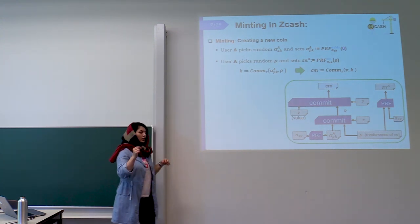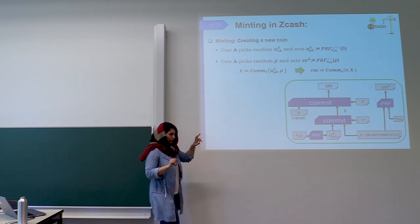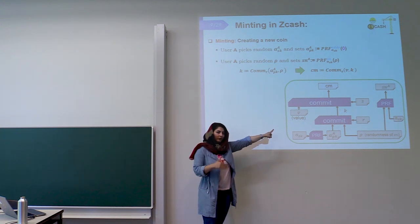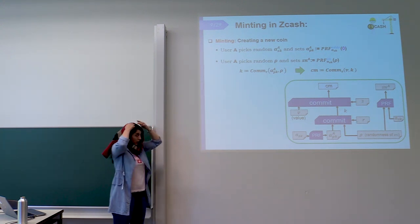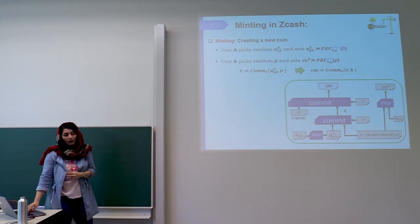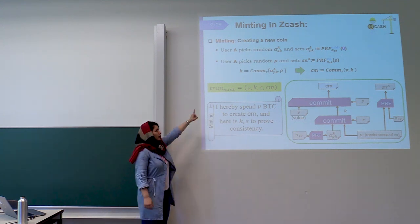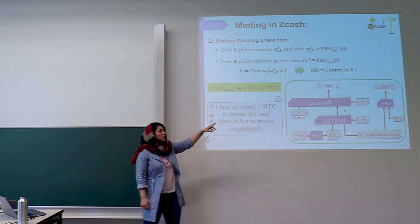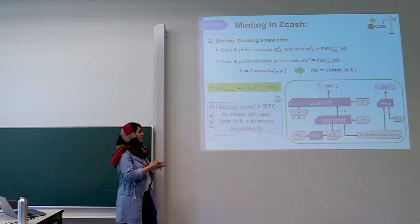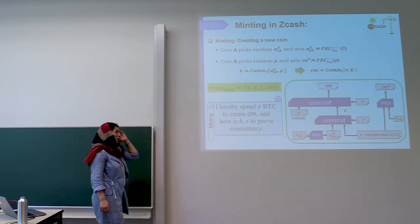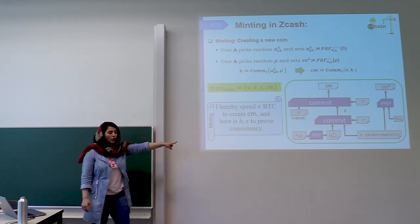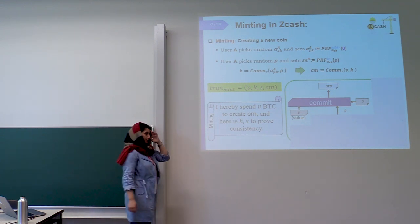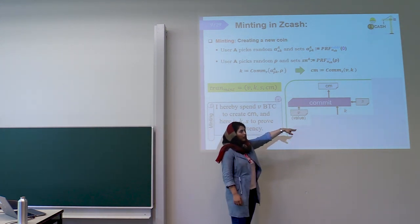In the second layer, she picks another randomness S, and gives randomness S, K, and the value — which is the desired value for the new coin — to a commitment function, and gets the coin commitment. The output of this algorithm is a mint transaction which contains V, K, S, and the coin commitment. All users can check the integrity and consistency of everything. This transaction spends V Bitcoin to create the coin commitment, and K and S are used to prove consistency. All users will check the consistency of these values.